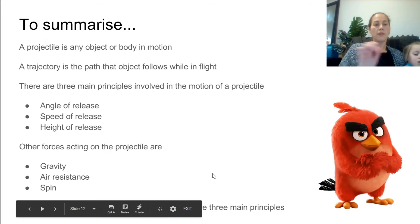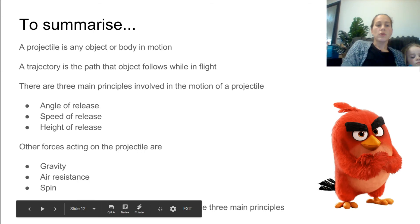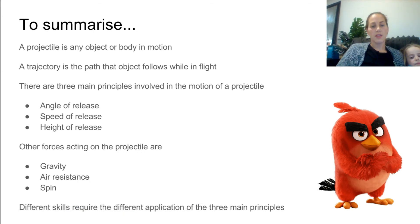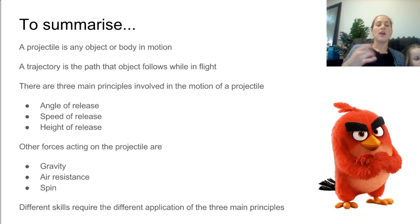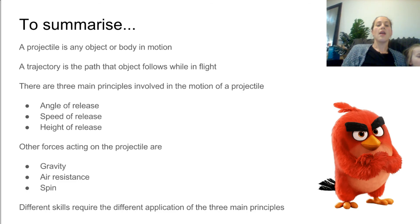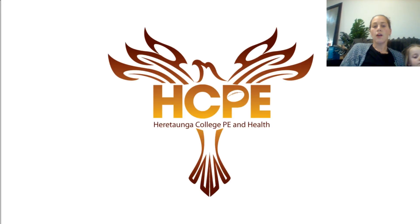To summarize: a projectile is any object or body in motion; a trajectory is the path the object follows while in flight. The three main principles involved in projectile motion are angle, speed, and height of release. Other forces that act on projectiles are gravity, air resistance, and spin. Different skills within different sports require different application of these three main principles.